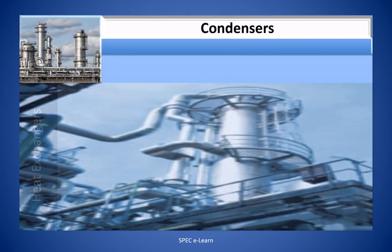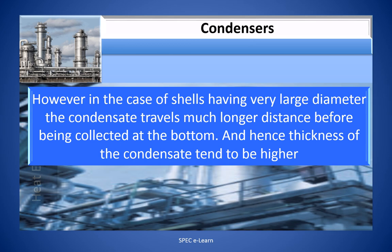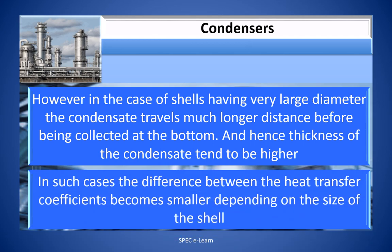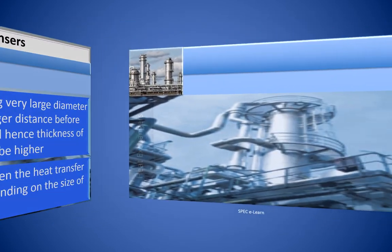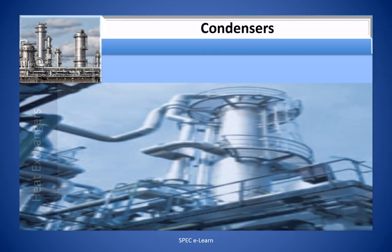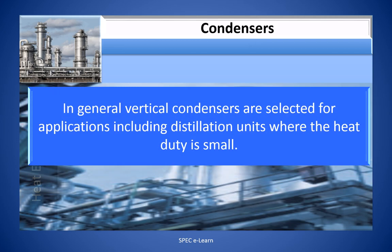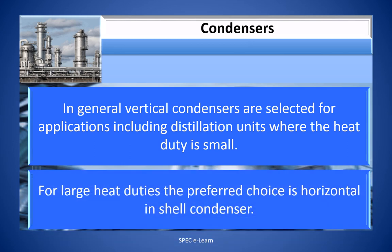However, in the case of shells with very large diameters, the condensate travels a much longer distance before being collected at the bottom, and the condensate film thickness tends to be higher — so the difference between heat transfer coefficients becomes smaller depending on the shell size. In general, vertical condensers are selected for applications including distillation units where the heat duty is small, while for large heat duties the preferred choice is horizontal in-shell condensers.